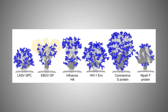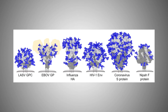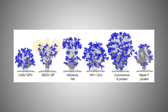Lots of different viruses coat themselves in host-derived lipids, which can play a variety of roles during the viral life cycle. One of these features that I look at is how the glycans help the virus to evade the immune response from the host.